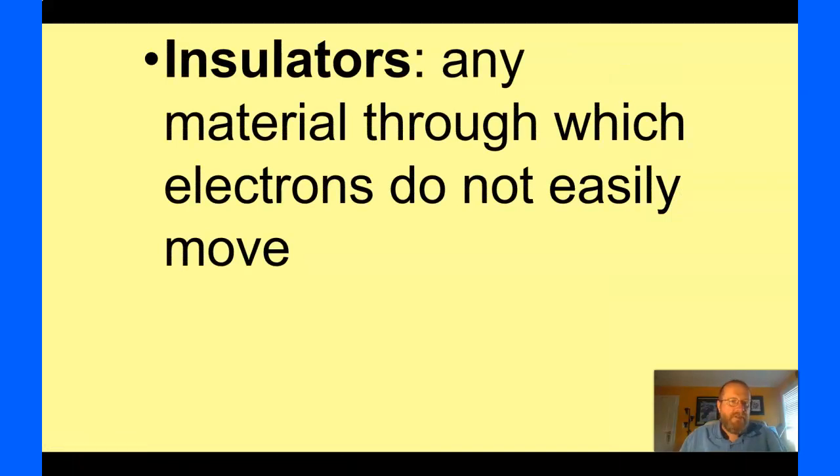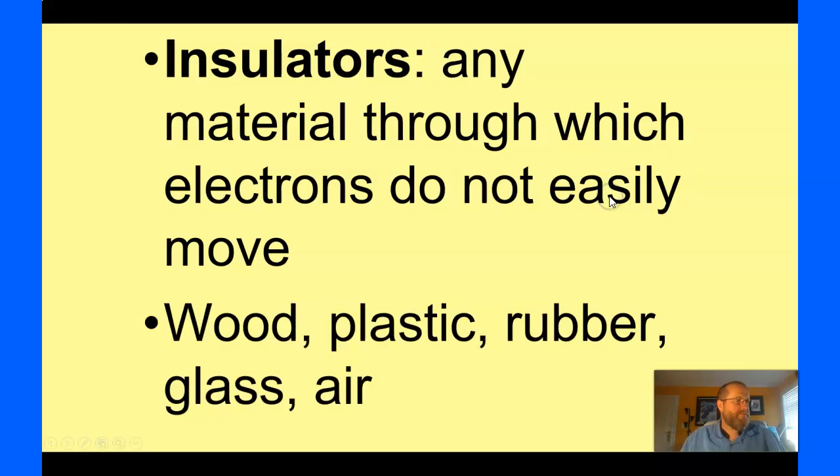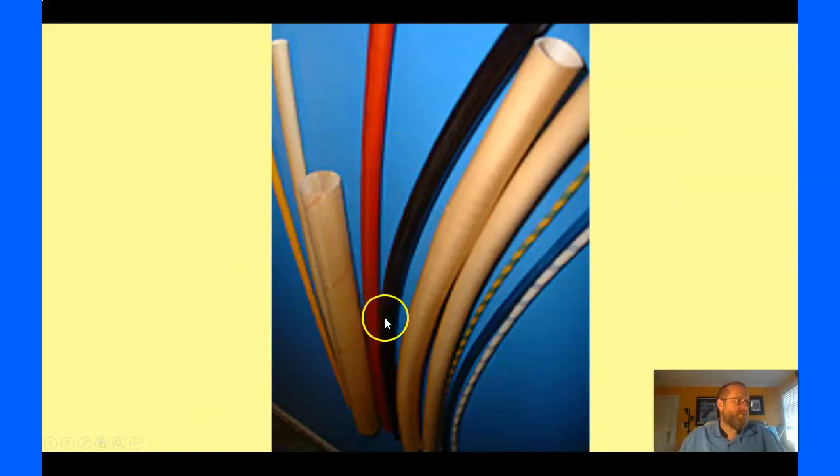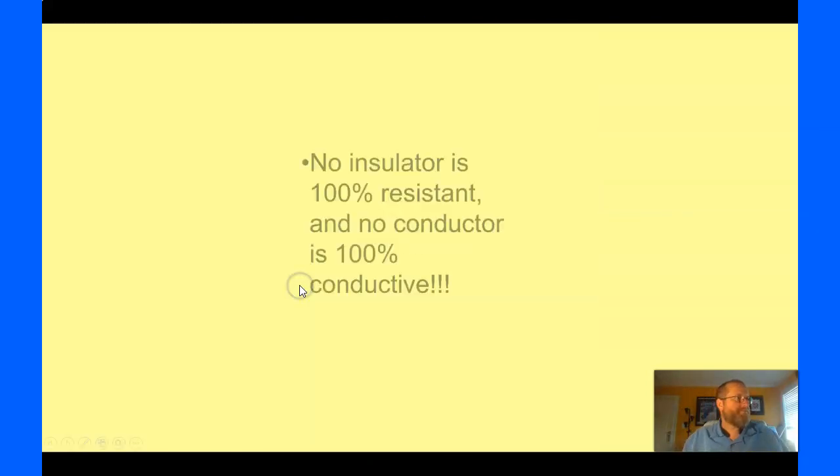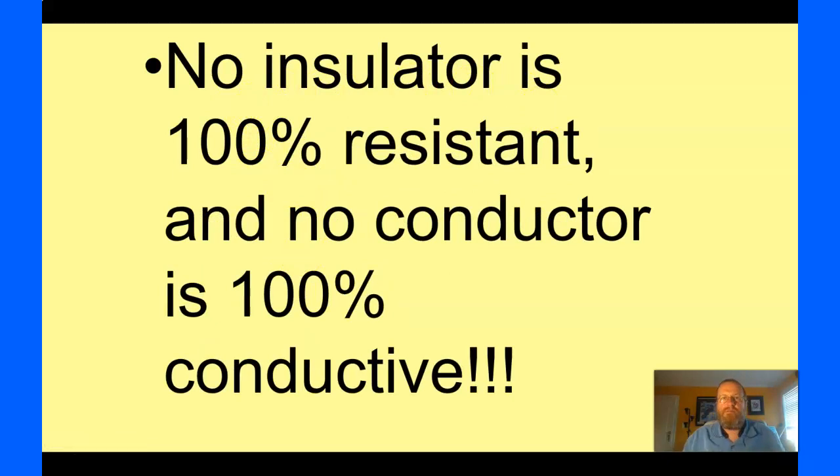Insulators is the opposite of a conductor. Any material through which electrons do not easily move. Good examples of wood, plastic, rubber, glass, air. Basically, these are also good insulators against thermal energy, aren't they? And the transfer of thermal energy. There's a similarity there somewhere. Now you know that. There's a picture of insulators. Basically, the tubing around any wires. See, this is a wire here going to the speaker. If it was exposed, there'd be just copper right there. But it has insulation around it. No insulator is 100% resistant and no conductor is 100% conductive. There's better conductors. There's better insulators. There's crappy conductors. There's crappy insulators. It's a range. It's a whole spectrum.